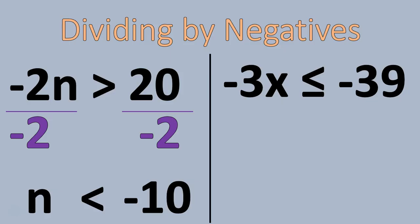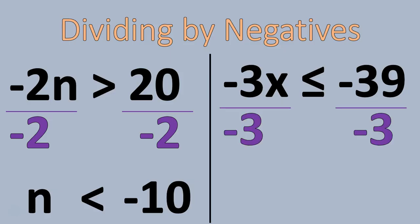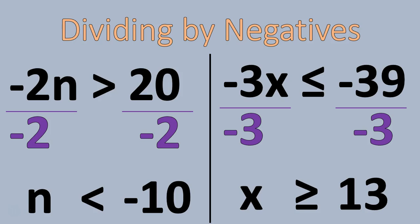Here's one more example: negative three x is less than or equal to negative 39. To solve this inequality, you divide both sides by negative three, because that's the coefficient of x. That leaves x by itself on the left, and on the right you have positive 13. We need to change the sign from less than or equal to, to greater than or equal to. Whenever you're dividing by a negative number, you have to switch the inequality sign.